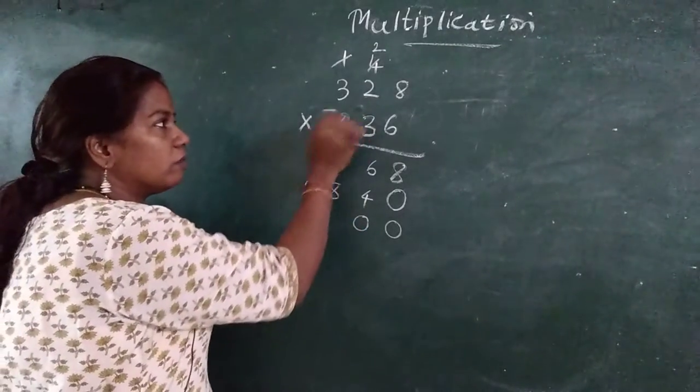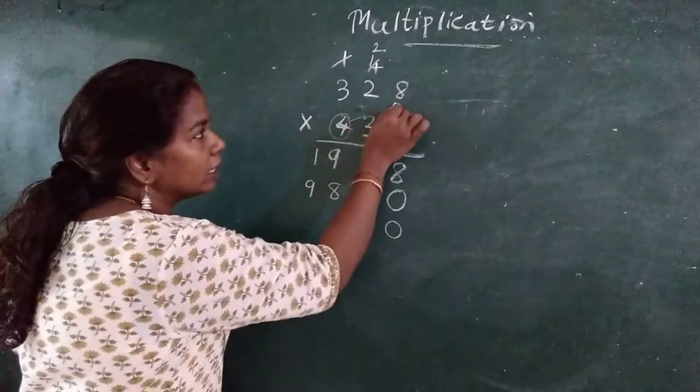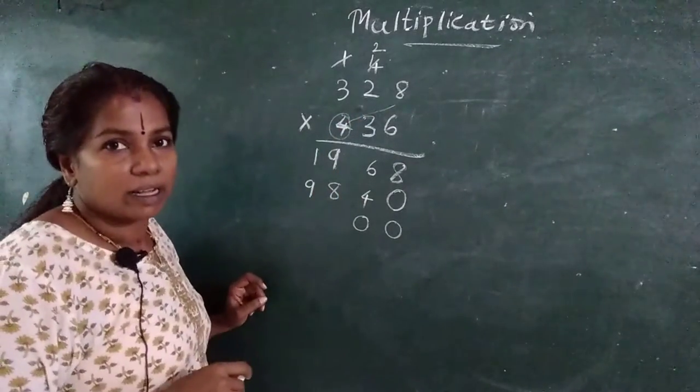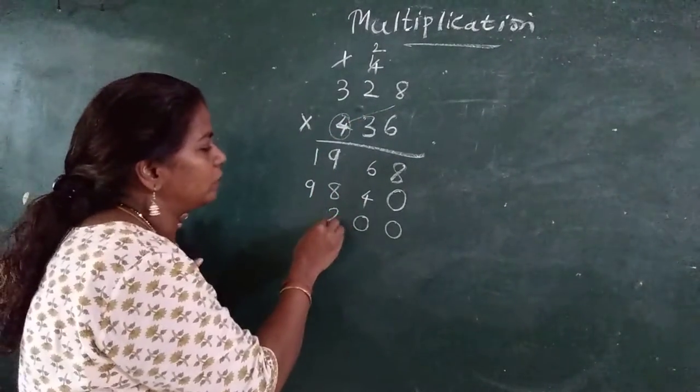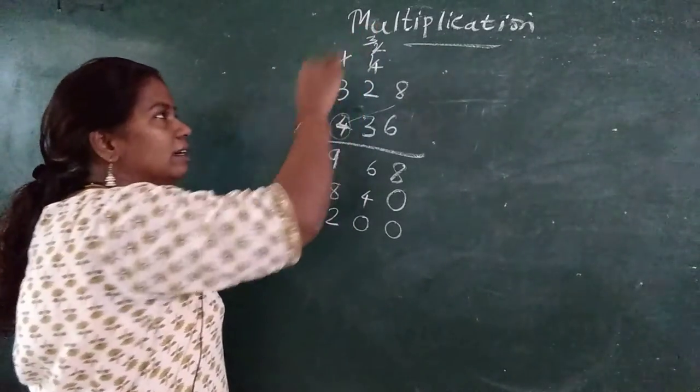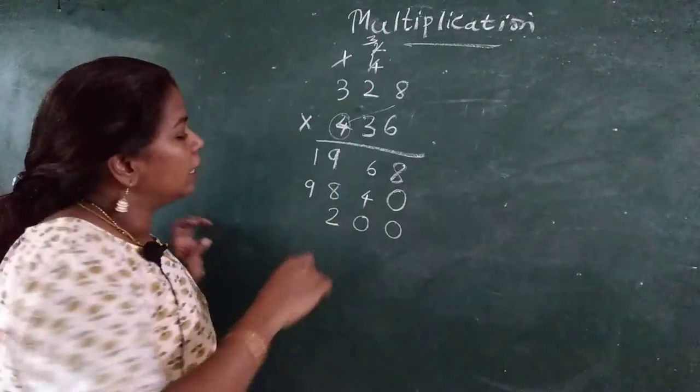Now which number is there? 4. 4 multiplied by 8. 4, 8's are 32. Very good. 2 here and 3 here. Got it? Next.